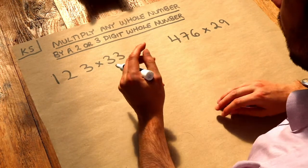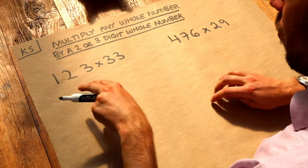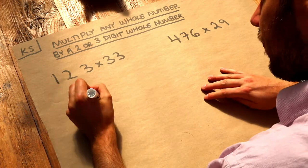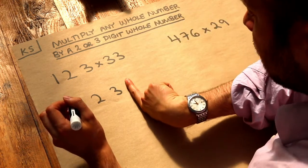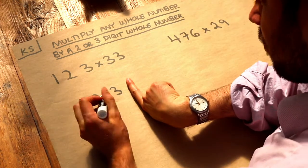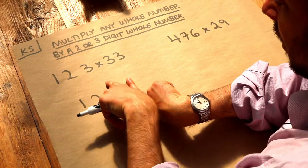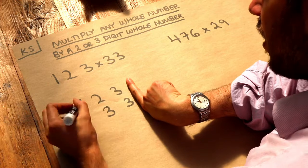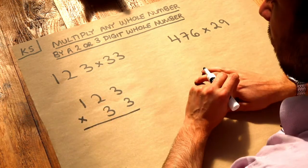Now as with the previous video where we multiplied a whole number by just a single digit whole number, we arrange these two numbers so that we right align them. So imagine an edge on the right, we're going to push these two numbers up to the right like this, so that the units digit is in the same column, the tens digit and so on. And this is known as column multiplication we're about to do.